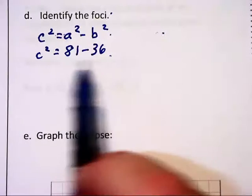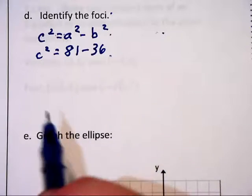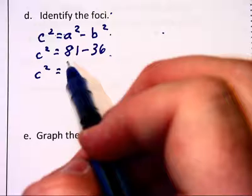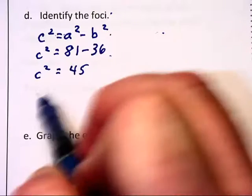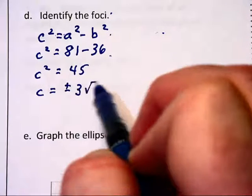Notice it needs to be in this order. If you went 36 minus 81 you would get a negative value. And c squared can't be negative. So subtracting 81 minus 36 we get 45. And therefore c will equal plus or minus 3 root 5.